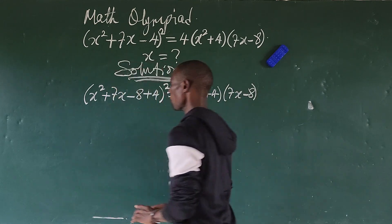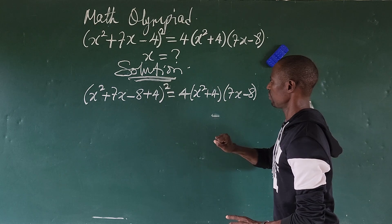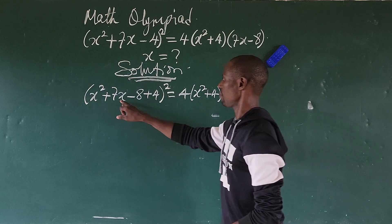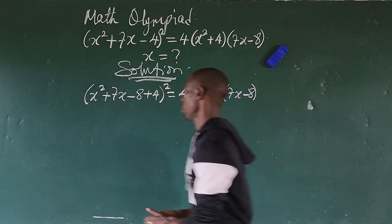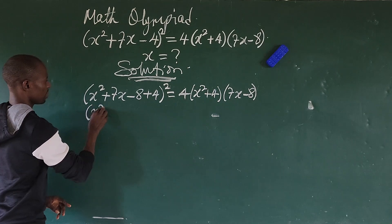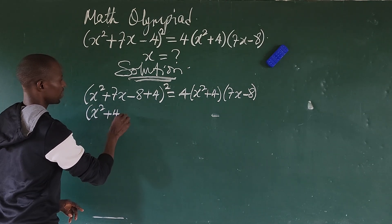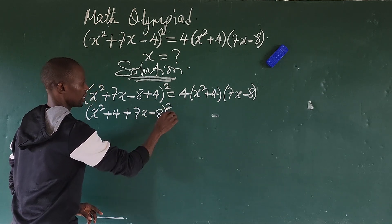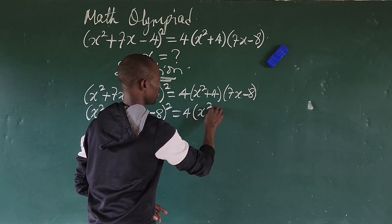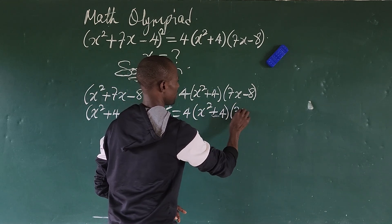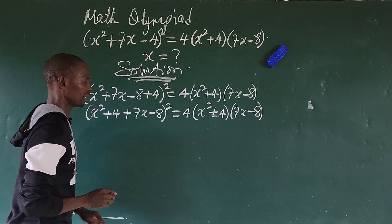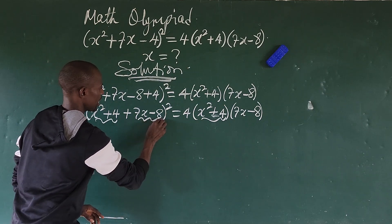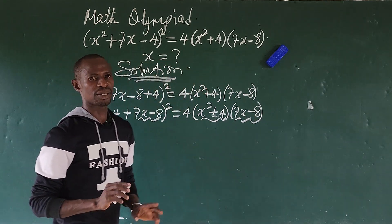Look at this: x² + 4 — I can bring this and this together — and here 7x - 8 — I can bring this and this separately. So rewriting this gives us (x² + 4 + 7x - 8)² = 4(x² + 4)(7x - 8). We can see the same groupings appearing on both sides.